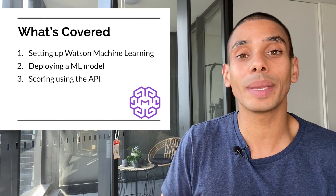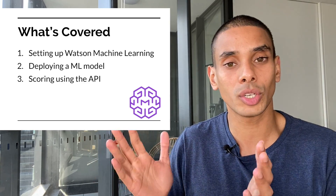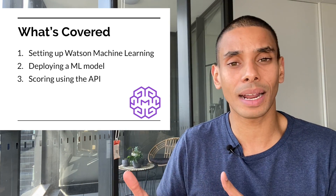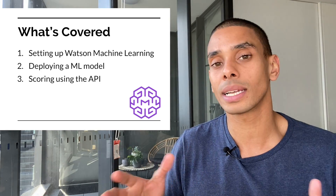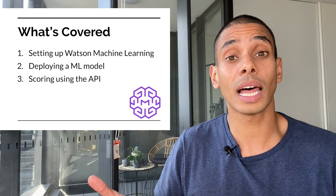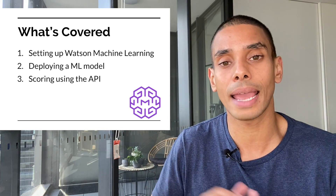Deployment is really important because it allows you to hook into other things. Say we wanted to build a React app or use Node.js to interact with our API — that's where deployment comes in. Specifically today we're going to be taking a look at how we can deploy our machine learning model using Watson Machine Learning. We'll cover how to set it up easily, how we can deploy it with just a couple of lines of Python code, and how we can perform scoring using that deployed REST API endpoint.